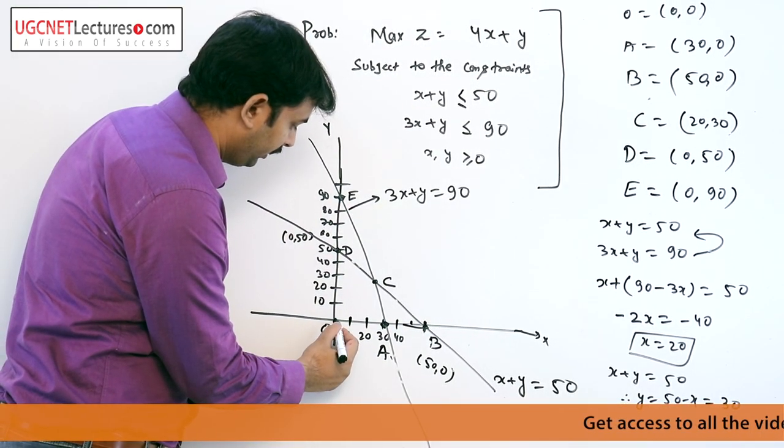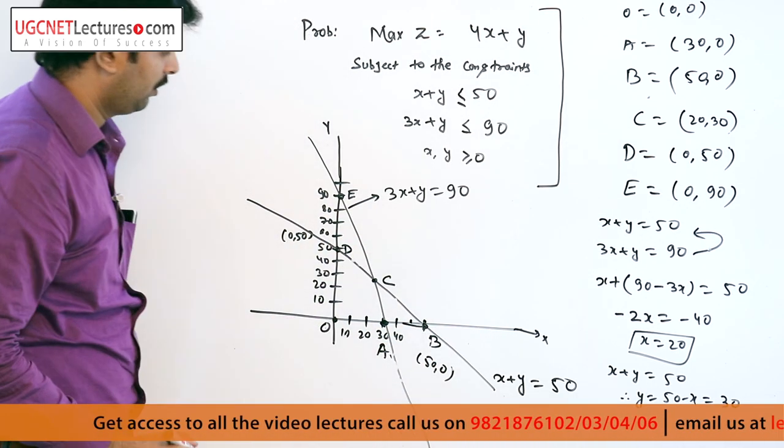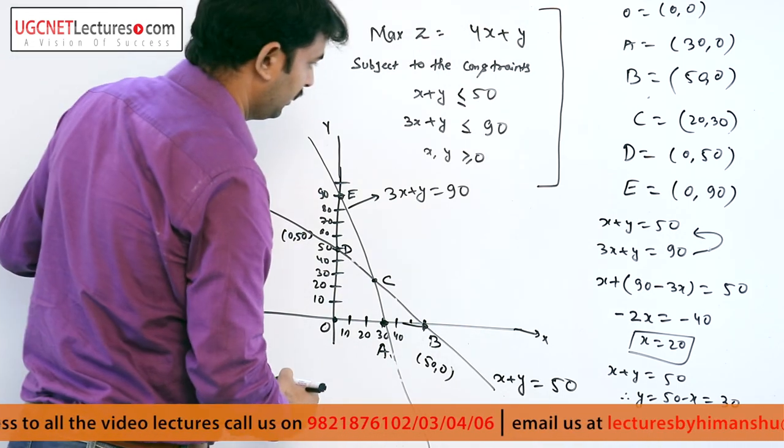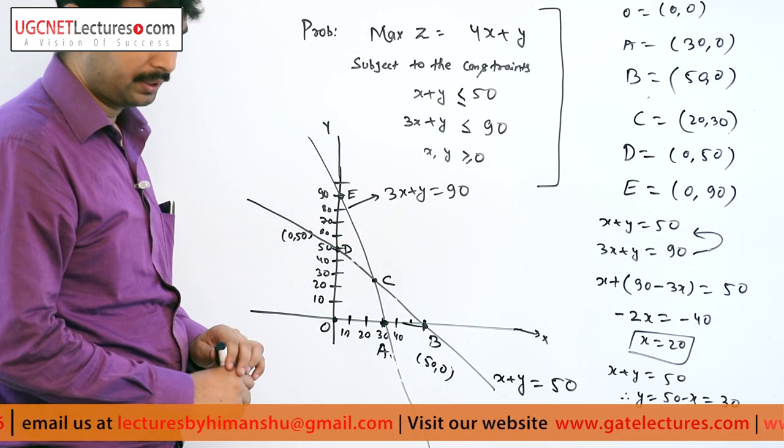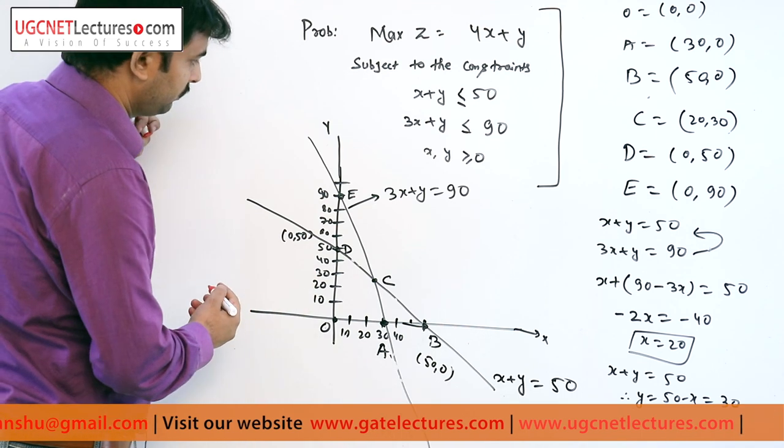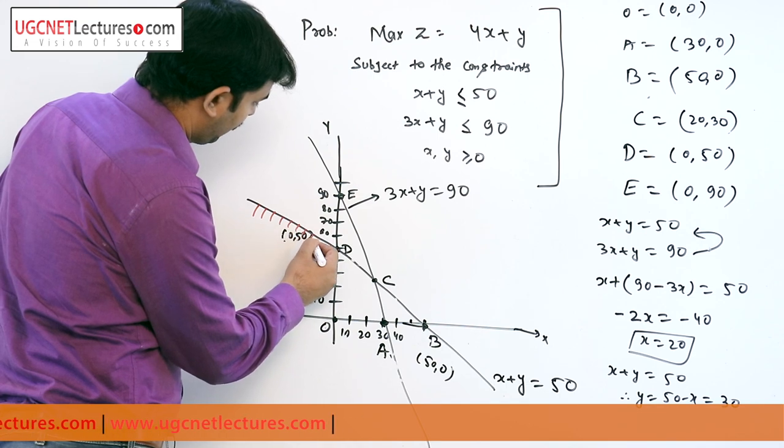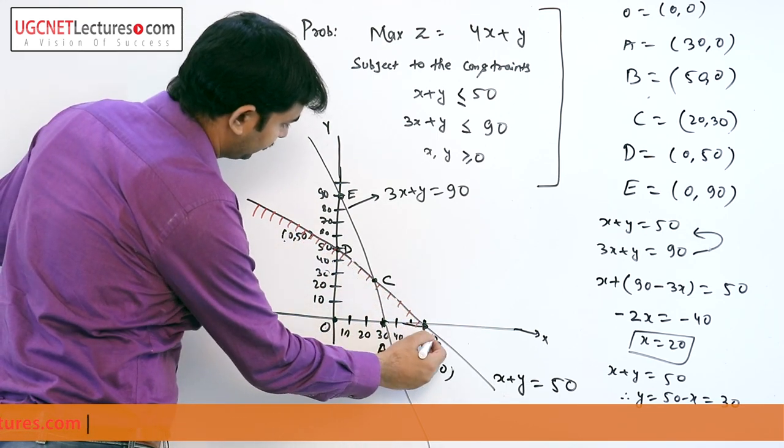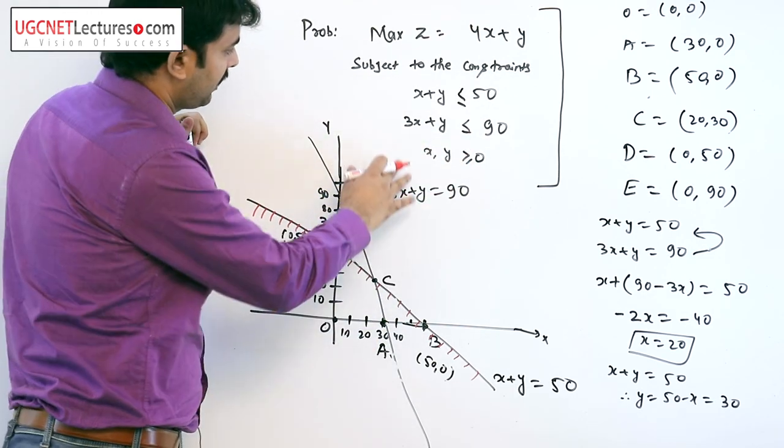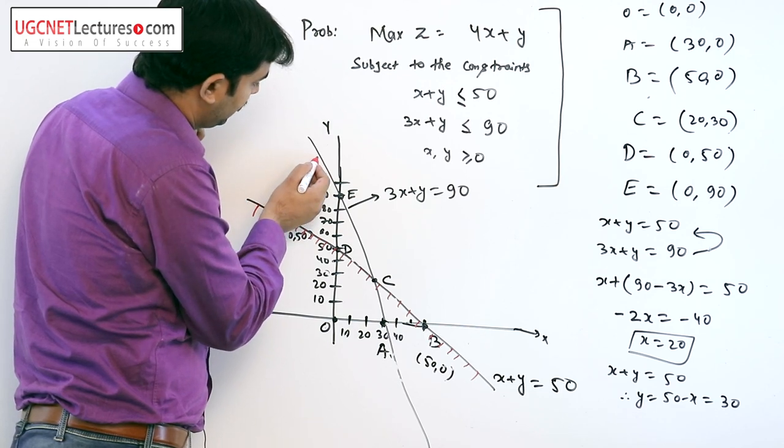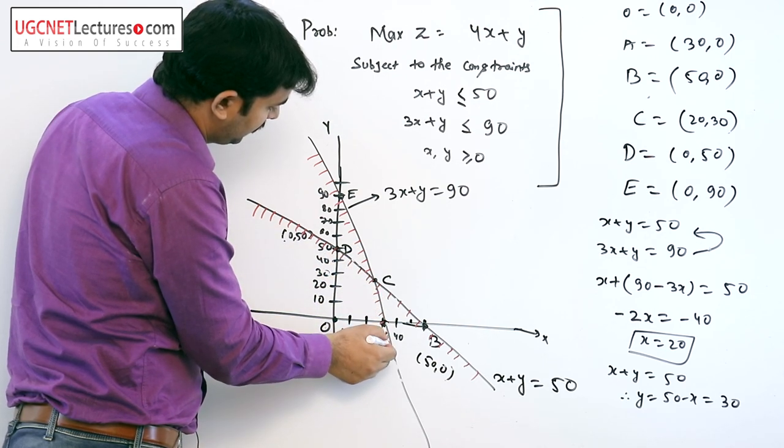We are evaluating the extreme points of the graph. If we look carefully, x plus y is less than or equal to 50 means the area of concern is below the x plus y equals 50 line. The second constraint, 3x plus y is less than or equal to 90, means our concern is below this line.